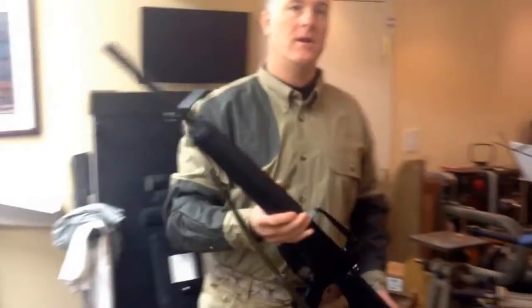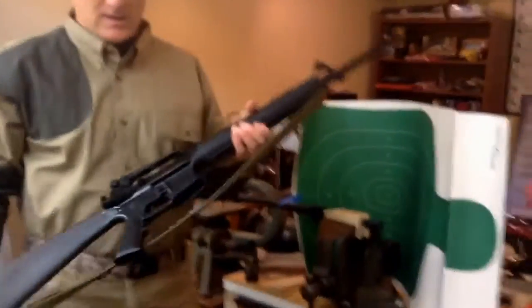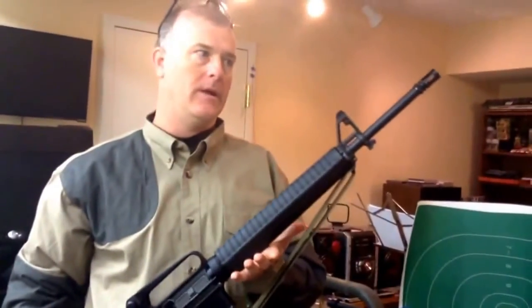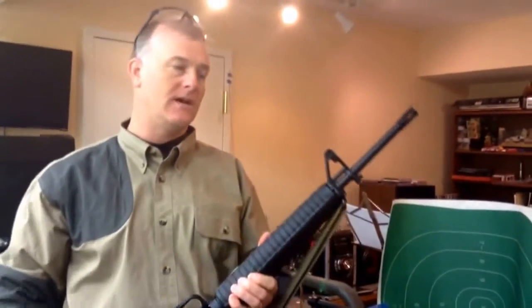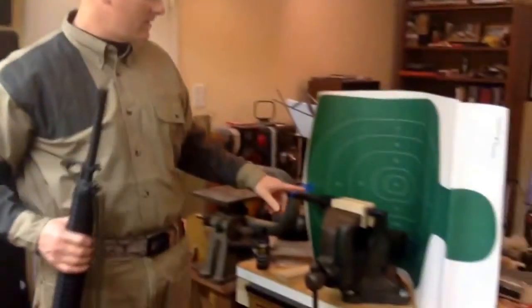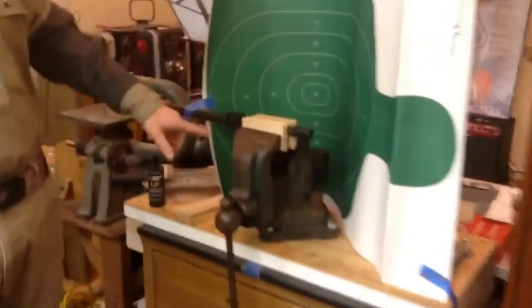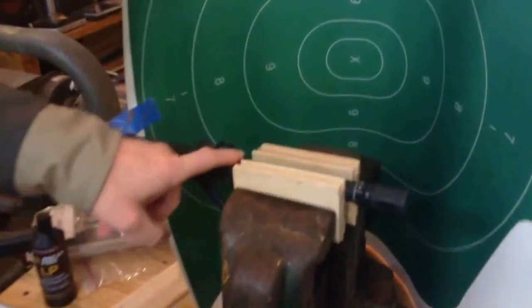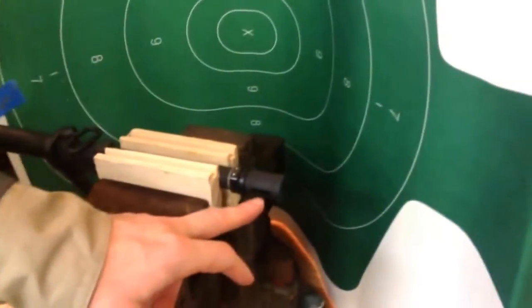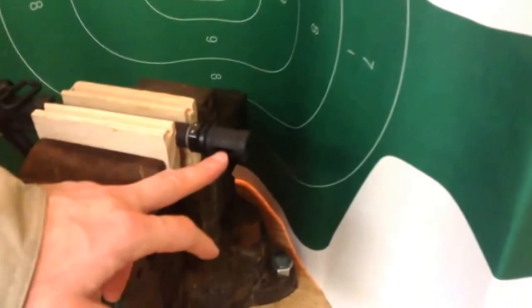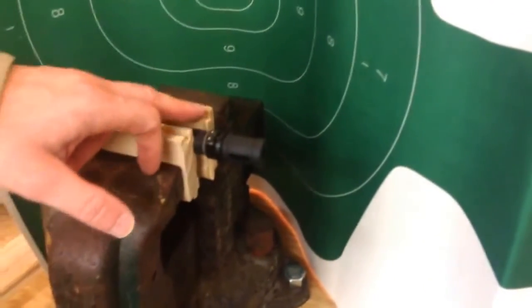So during the assault weapon ban, I bought a Rock River Arms LAR-15 in A2 style, but originally it came with a 20-inch barrel that had a front sight base with no bayonet lug, and this goofy, unuseful muzzle brake that's pinned and then welded over.